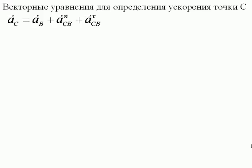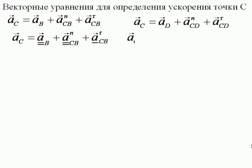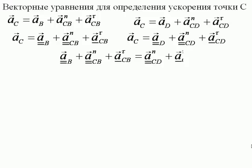Точка C одновременно принадлежит и шатуну BC, и коромыслу CD. На основании теоремы о сложении ускорений можно записать следующие векторные уравнения. В каждом из них по три неизвестных. Но если приравнять их правые части, то получим уравнение с двумя неизвестными, которое может быть решено графическими построениями.